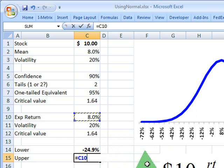And I want to go to the right of mean as well. So here, I would say equals the mean plus the product of my volatility and my critical value.